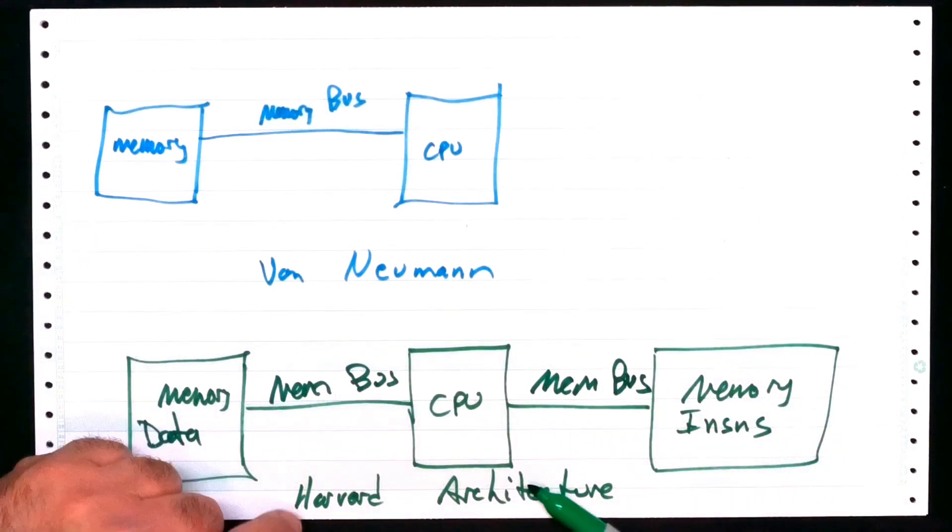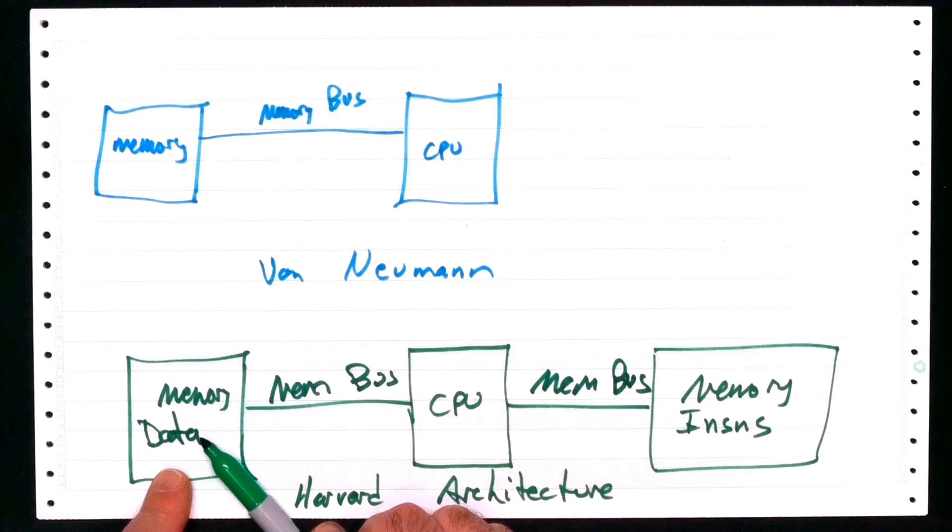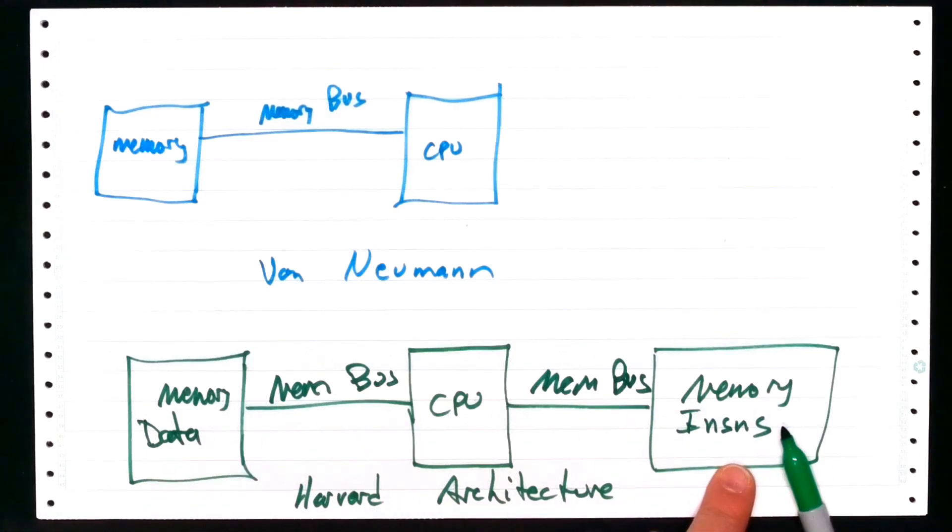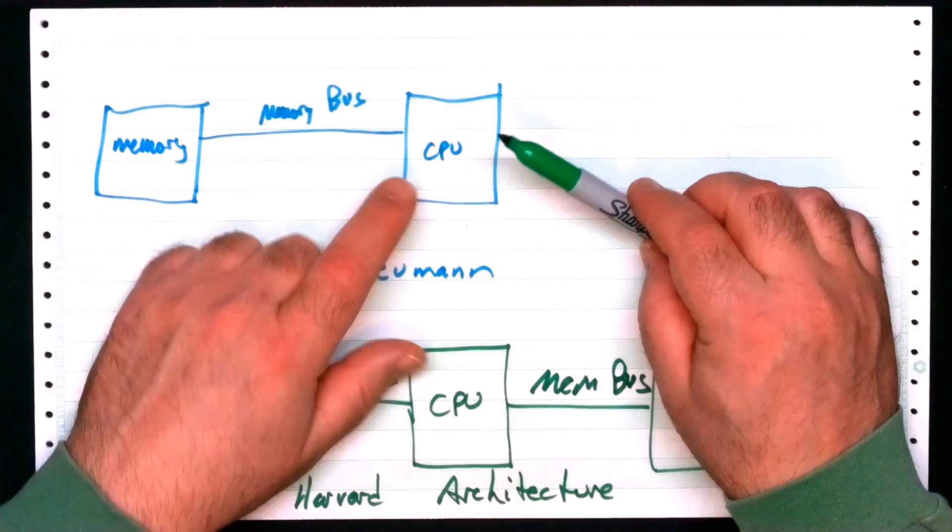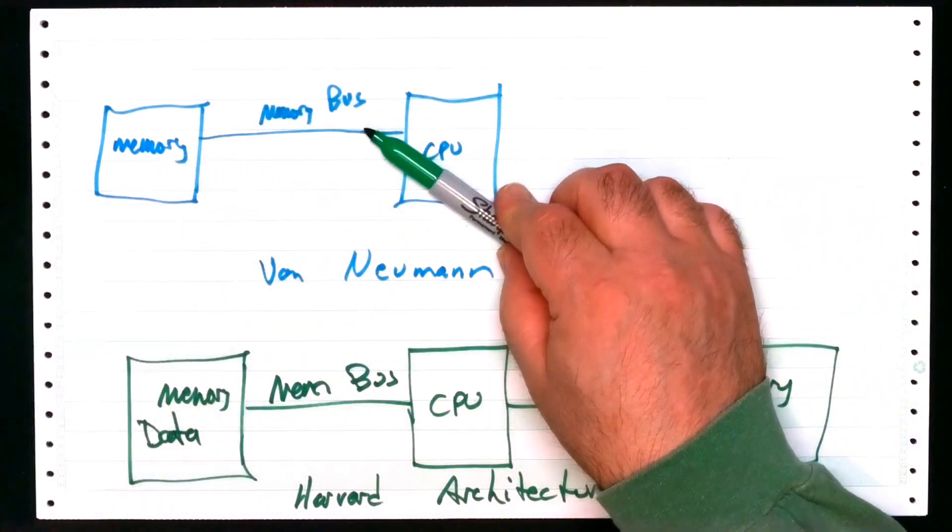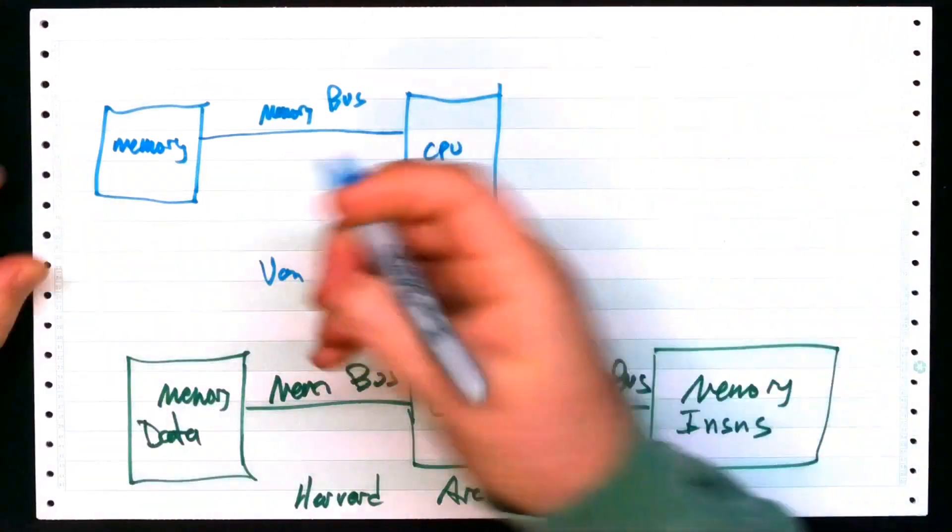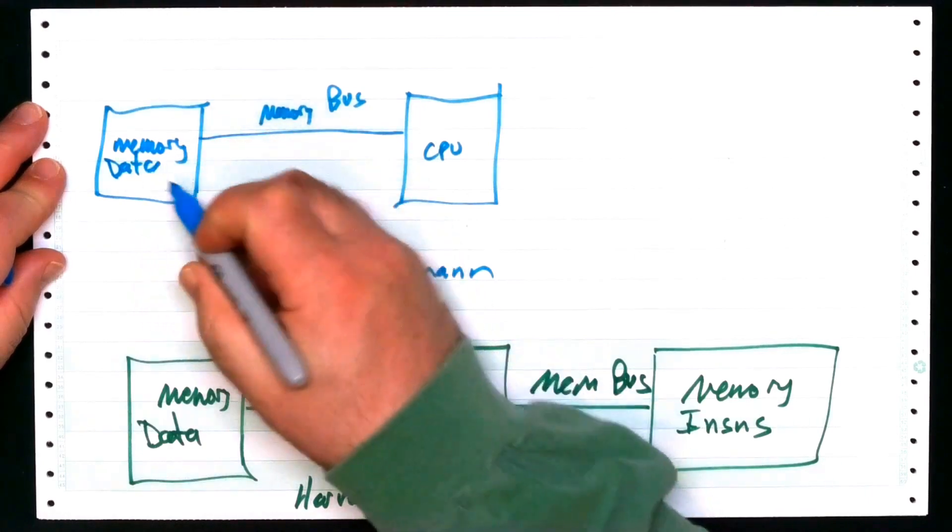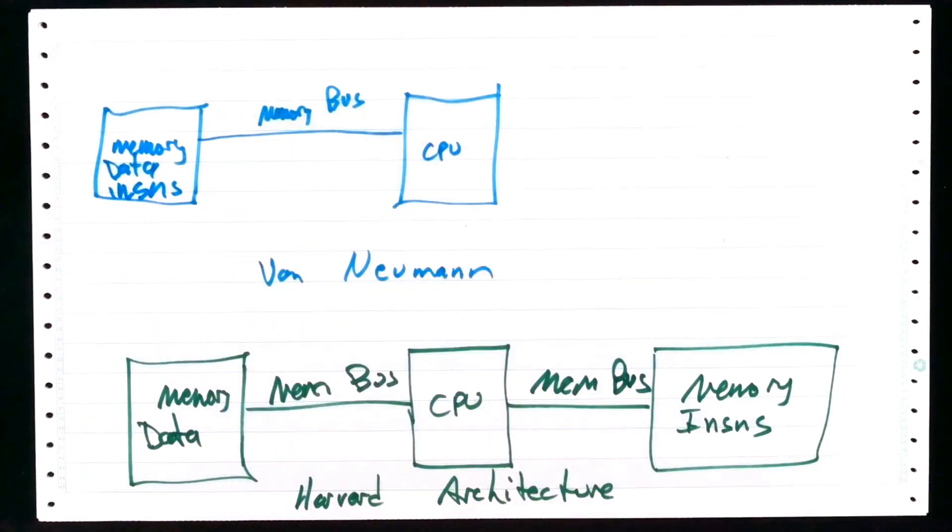What are these things? These are both memory buses, and I'll abbreviate that too. So in a Harvard architecture, you have two memory buses. One of the memory holds the data for your program, and another memory holds the instructions for your program. Well, the von Neumann architecture, you have a CPU, you have a single shared memory bus, and the memory over here holds all of your data and your instructions.